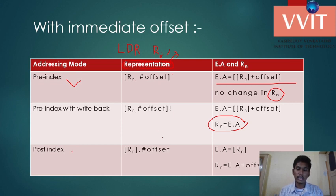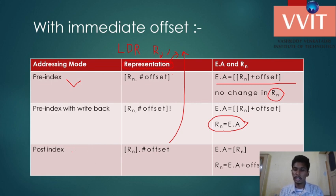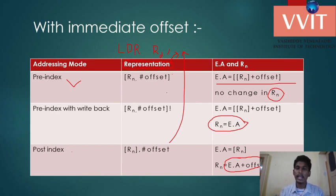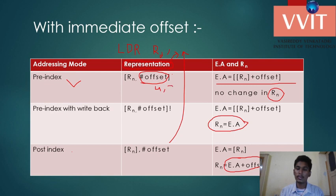The third mode in the table is post-indexed. Its representation is LDR Rd, with Rn within square brackets, followed by hash offset outside the brackets. In the post-indexed addressing mode, the effective address is the contents of Rn. Only after taking the effective address is the Rn value updated with the offset. This is with immediate offset, meaning the offset value is mentioned directly as a number like 4 or 3.